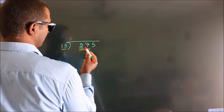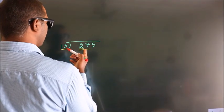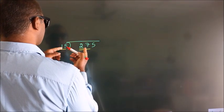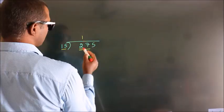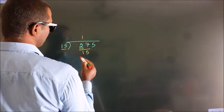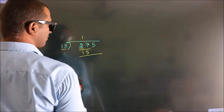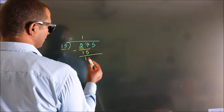27. A number close to 27 in the 15 table is 15 once, 15. Now we subtract and get 12.